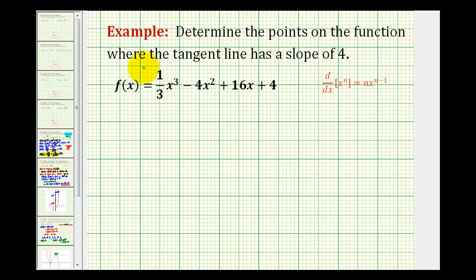We need to determine the points on the function where the tangent line has a slope of four. The derivative function does tell us the slope of the tangent lines at a given value of x. So what we can do here is find our derivative function, set it equal to four, and then solve for x. That'll tell us the x-coordinates where the tangent line has a slope of four.